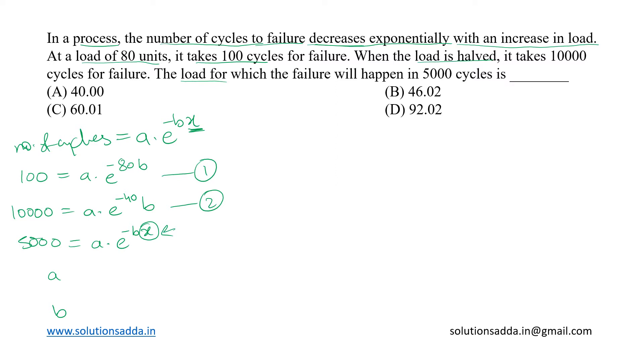So let us divide these two equations together and we shall get 10,000 upon 100 equal to a times e raised to minus 40b upon a times e raised to minus 80b.